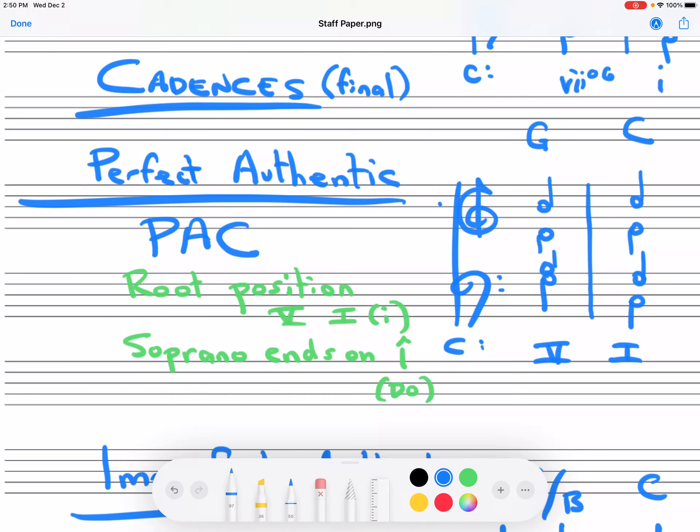Cadences are goals, harmonic goals, that usually come at the end of a phrase. So what is a phrase? A phrase is any complete musical idea.